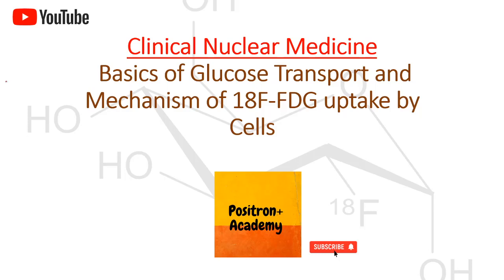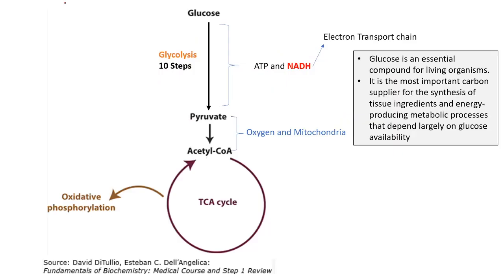Hello everyone, welcome to Positron Academy. Today we will discuss the basics of glucose transport and the mechanism of FDG uptake by cells. Glucose is an important metabolite for living organisms — an important carbon supplier for the synthesis of tissue ingredients and for energy-producing metabolic processes, all of which depend solely on glucose.